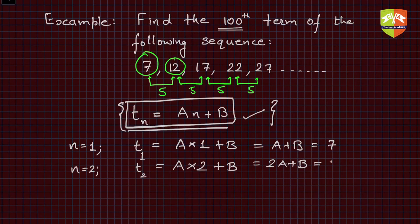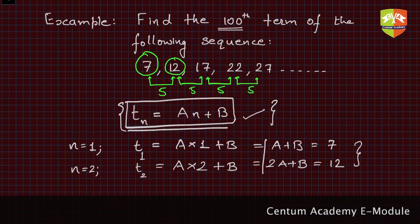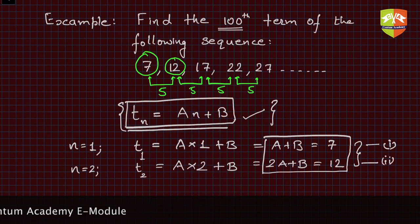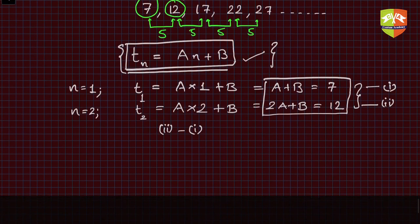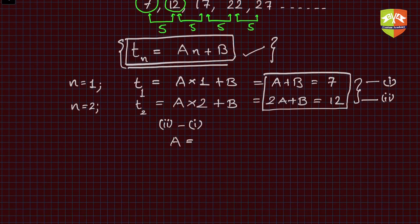From our knowledge of linear equations, we can solve these two equations and find the value of A and B. Let's say this equation is (1) and this equation is (2). If I do (2) minus (1), you will get simply A = 5.